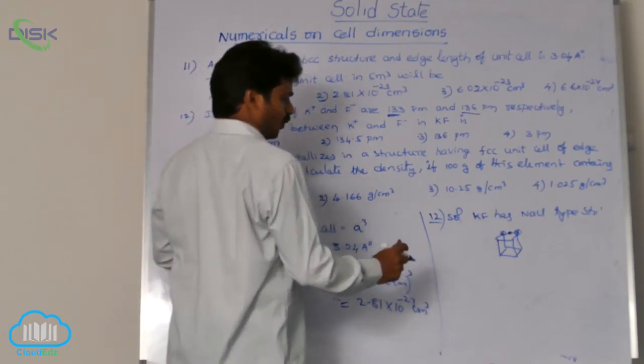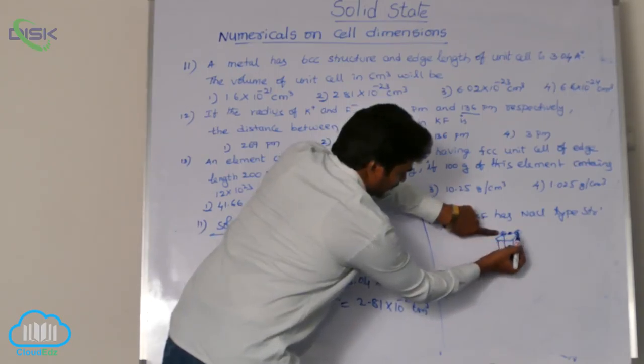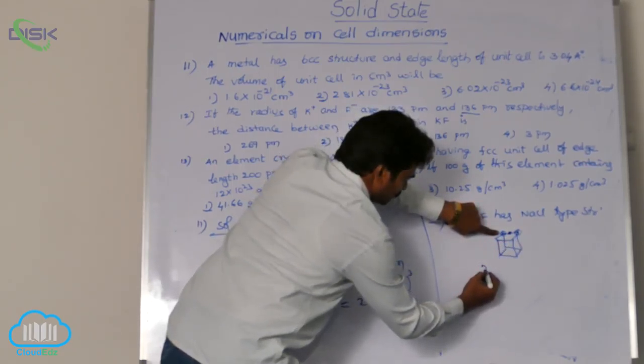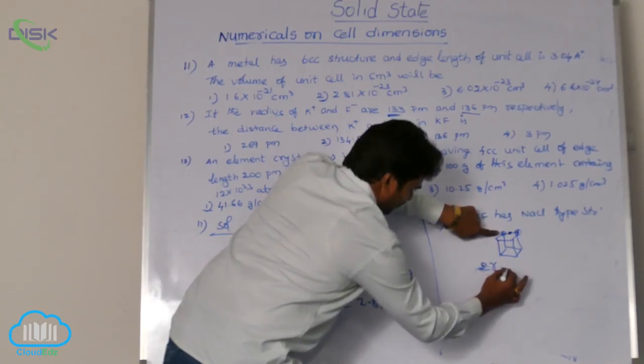So, here, what is the formula we can write? From this sphere half, from this sphere half. That means, 2 into radius of anion, fluoride ion plus.